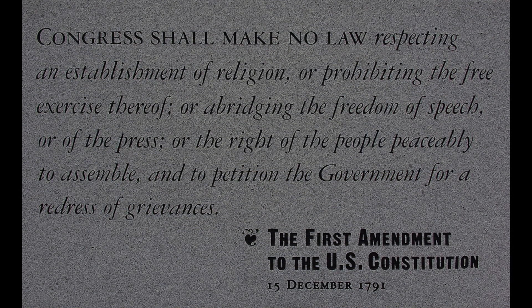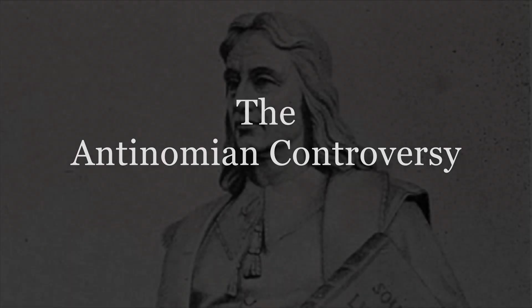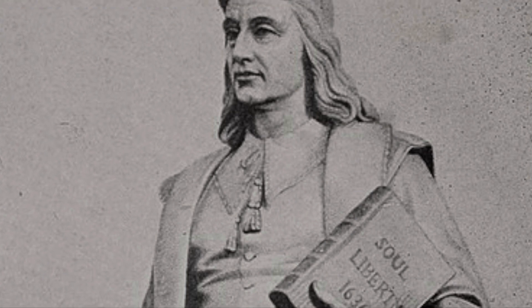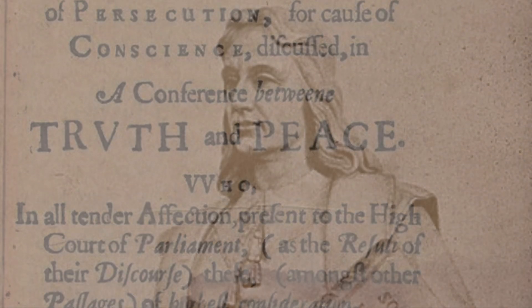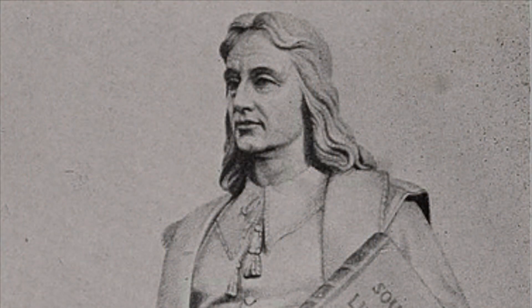Had the First Amendment existed in their time, they would have been in violation of all five of its freedoms—press and speech, petition and assembly, and religion. This is evident in the expulsion of reform-minded leaders such as Roger Williams and Anne Hutchinson. Williams was banished from Massachusetts for promoting the ideas of separation of church and state and what he called the liberty of conscience. Upon his banishment, Williams not only founded the colony of Rhode Island, but also the First Baptist Church of Providence—the oldest Baptist church in America.